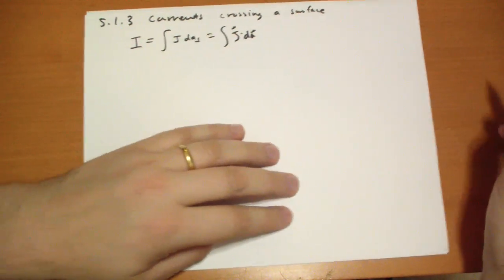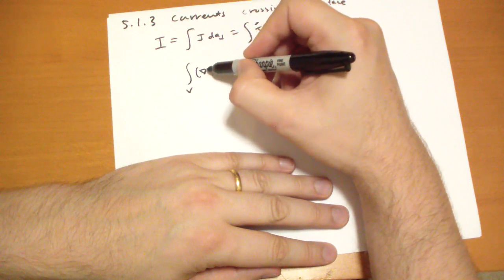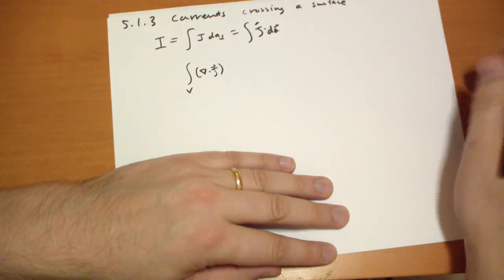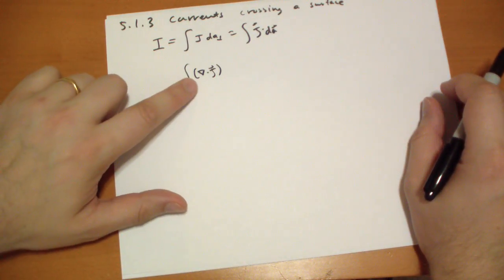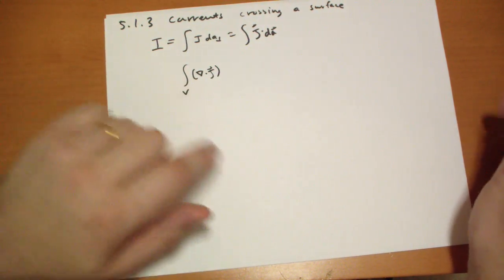Then we do this little trick. We say, well, let's take some volume integral. Let's take the divergence of this J vector. So the volume current. So is there a current flowing into or out of this point?